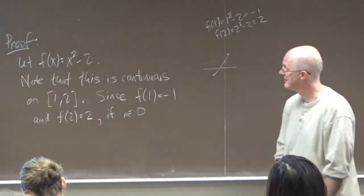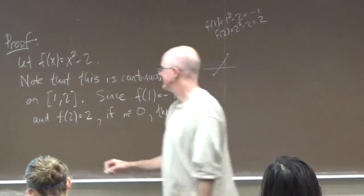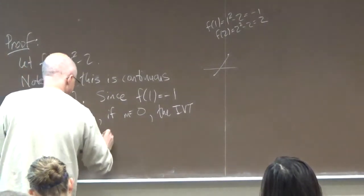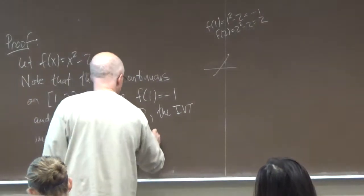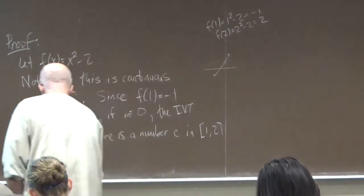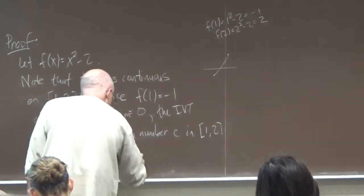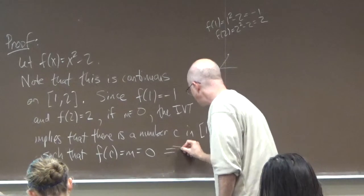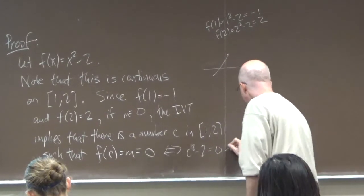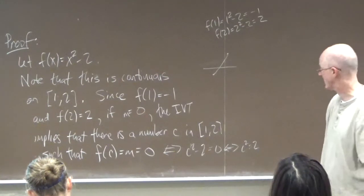If m equals zero, this intermediate value theorem which I abbreviate IVT implies that there is a number c in this interval from one to two such that f of c equals m, which is zero. That's equivalent to c squared minus two equaling zero, which is equivalent to c squared equaling two. And since c is between one and two, it must be the positive square root of two. These two things imply c is the positive square root of two.